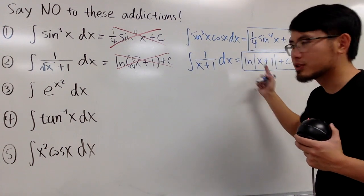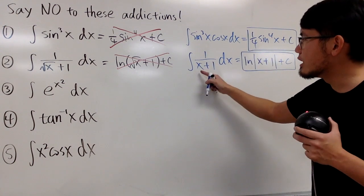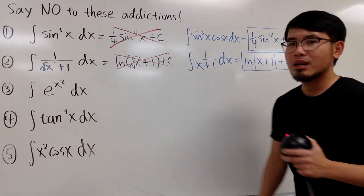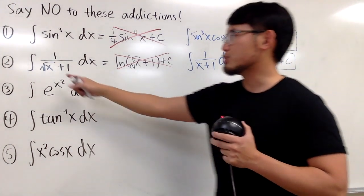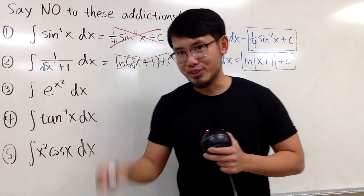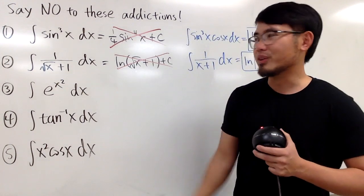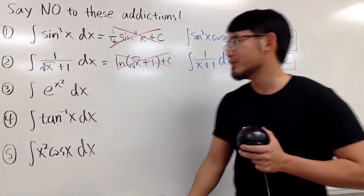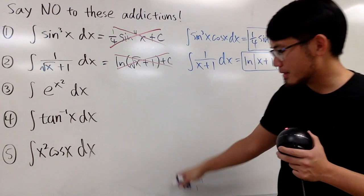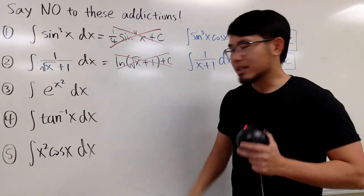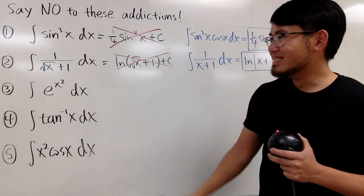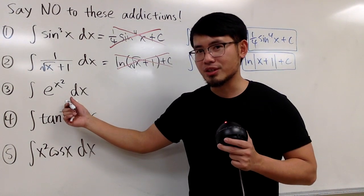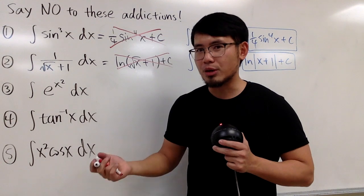This is the easy version because we have x to the first power. But when we have the square root version, be sure to check out the video for the actual way to do this — you need u sub. Now, the next one — I call this the chain rule addiction, even though it's a backward version.